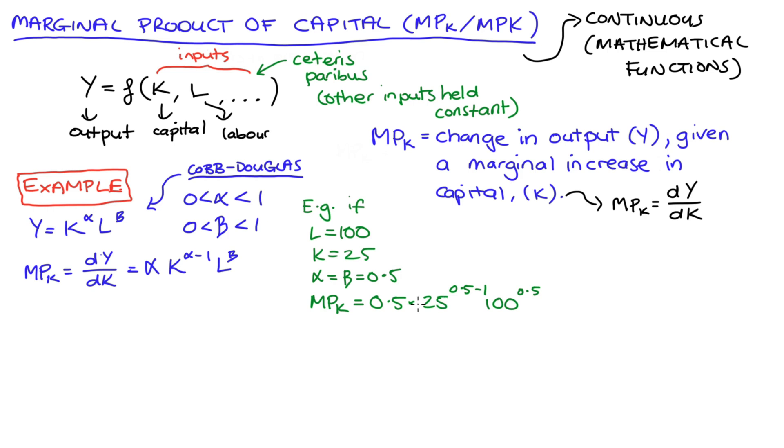Now our exponent here on capital ends up being negative 0.5, so 0.5 minus 1 is negative 0.5. And then we can see that 25 to the power of negative 0.5—if we rewrite this as a denominator, this gets rid of the negative in the exponent—so we can get this expression: 0.5 times 100^0.5 divided by 25^0.5.